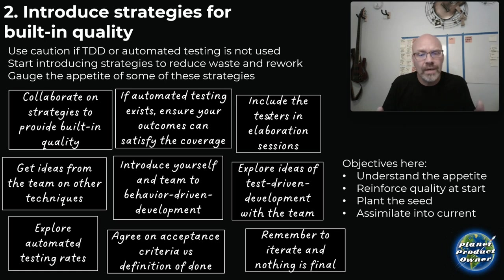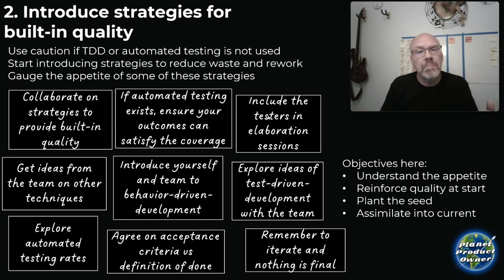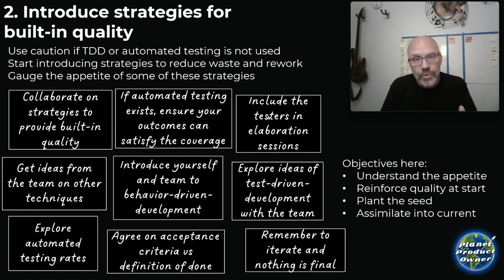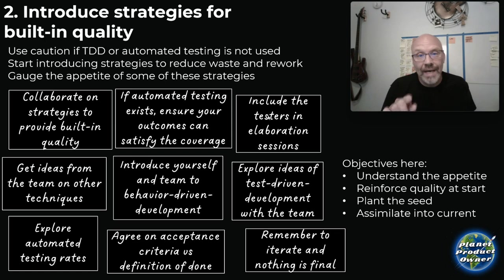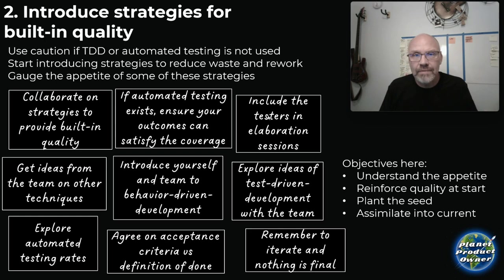There are some things we can do at the team level and some at the program level if you're in a scaled context, particularly with automated testing. Why am I telling you to do this now? I want you to introduce it — I didn't say implement it. What you're really trying to do right now is set expectations around built-in quality, and that's a critical part of the journey for you as a product owner. Remember what the Scrum Guide says: you are maximizing the value produced by the team.